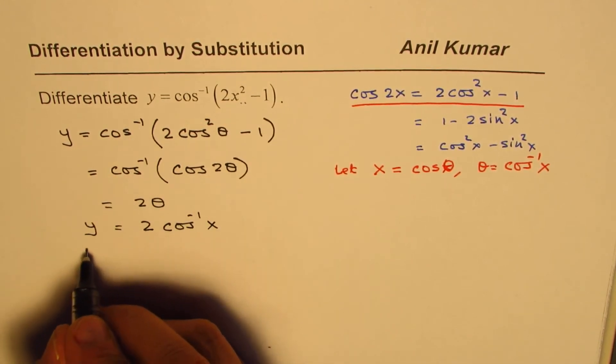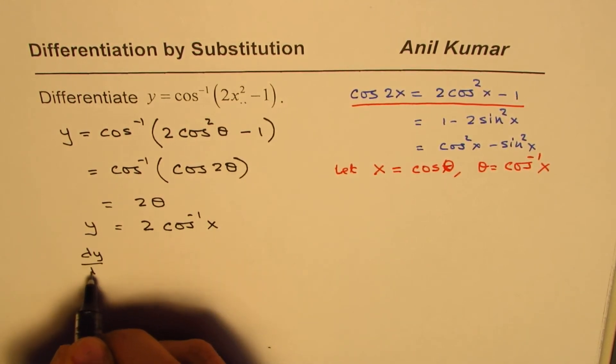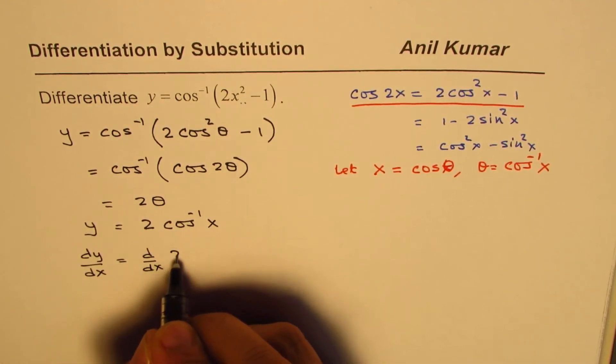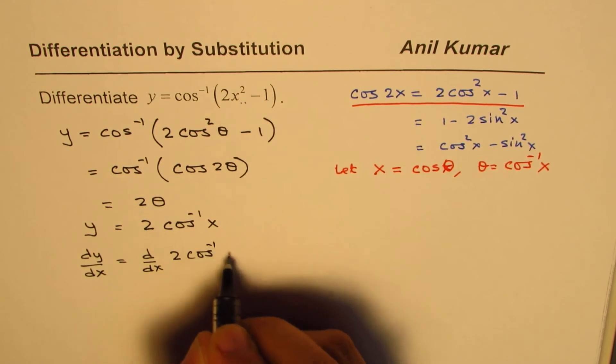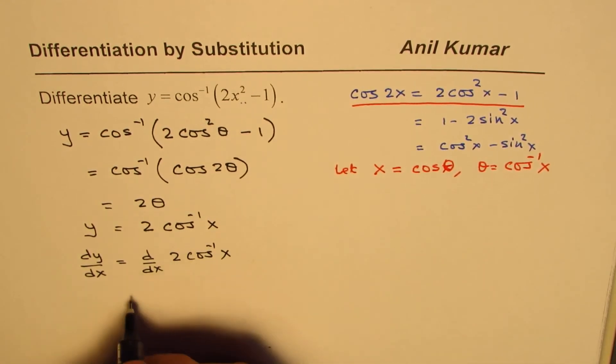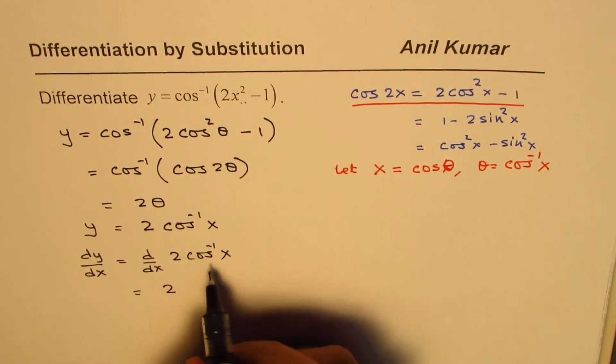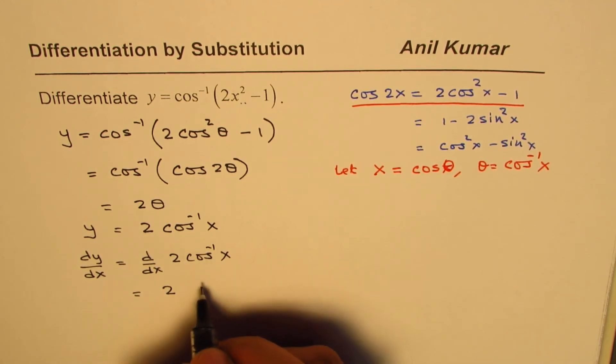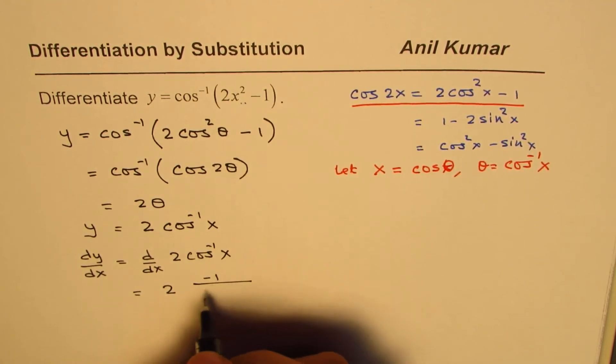Now we can differentiate very easily. We have dy dx equals d dx of 2 cos inverse x. 2 is a constant, so we get 2.